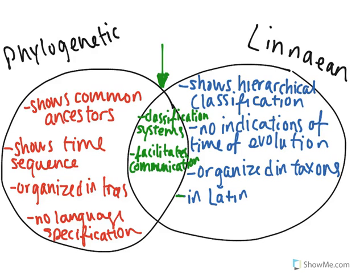Phylogenetic classifications are able to show something that Linnaean ones are not able to, and that's common ancestors. Because it's organized as a tree, it's able to show common ancestors. So if you have a bunch of species branching off, you know that this ancestor right here is the common one between them all.